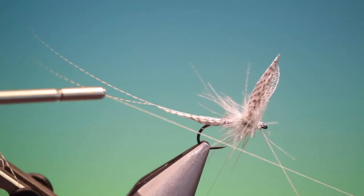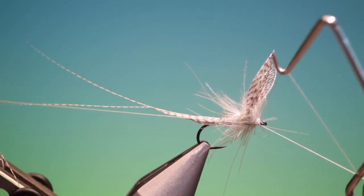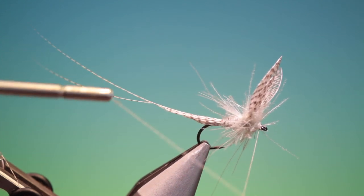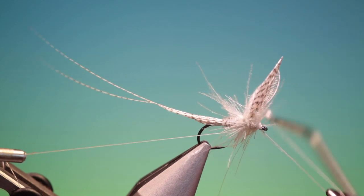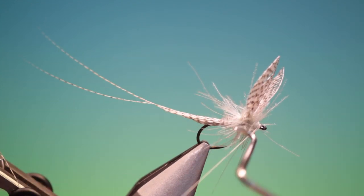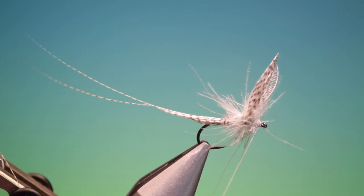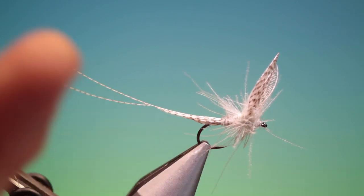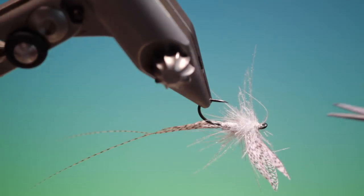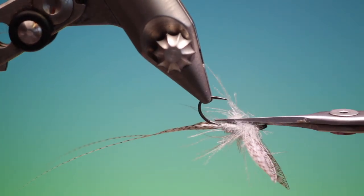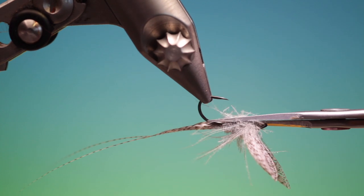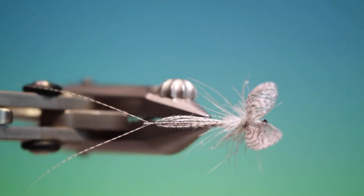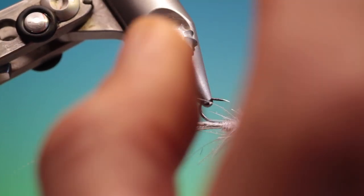Whip finisher - that people keep pointing out I keep calling a hackle plier. There we go. Scissors, remove the tying thread. Just trim off the bottom CDC. There we are.